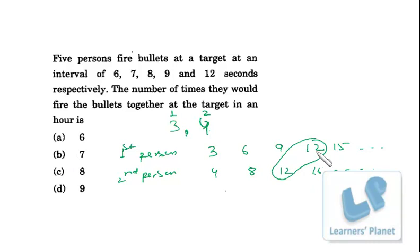You can see that on twelfth second this person is ringing and on twelfth second this person is also ringing. That means for the first time both of them will be ringing at twelfth second. Now what is twelve over here? That is nothing but the LCM of three and four.